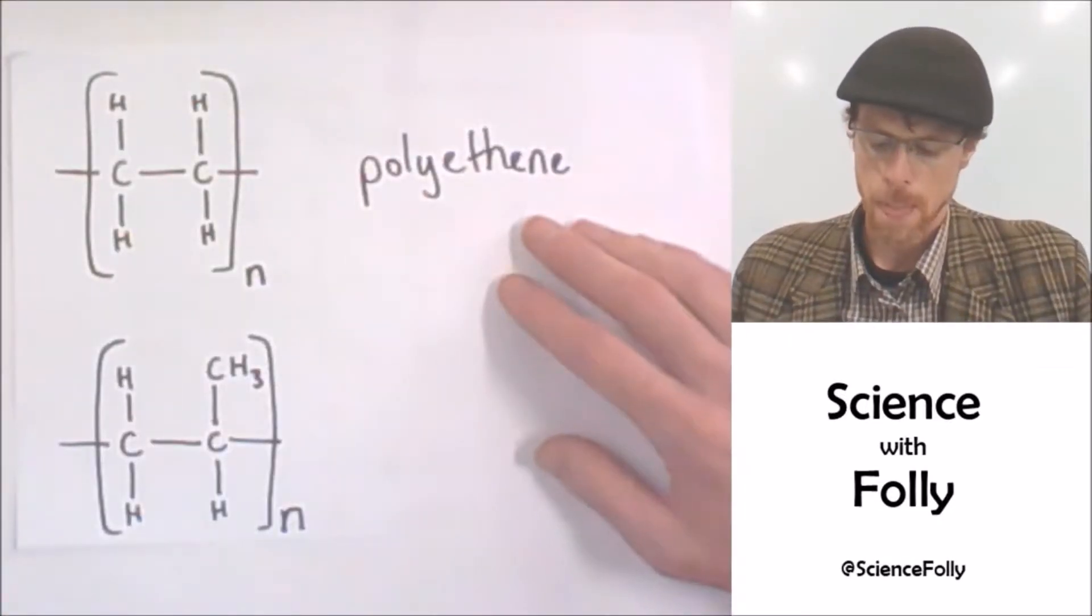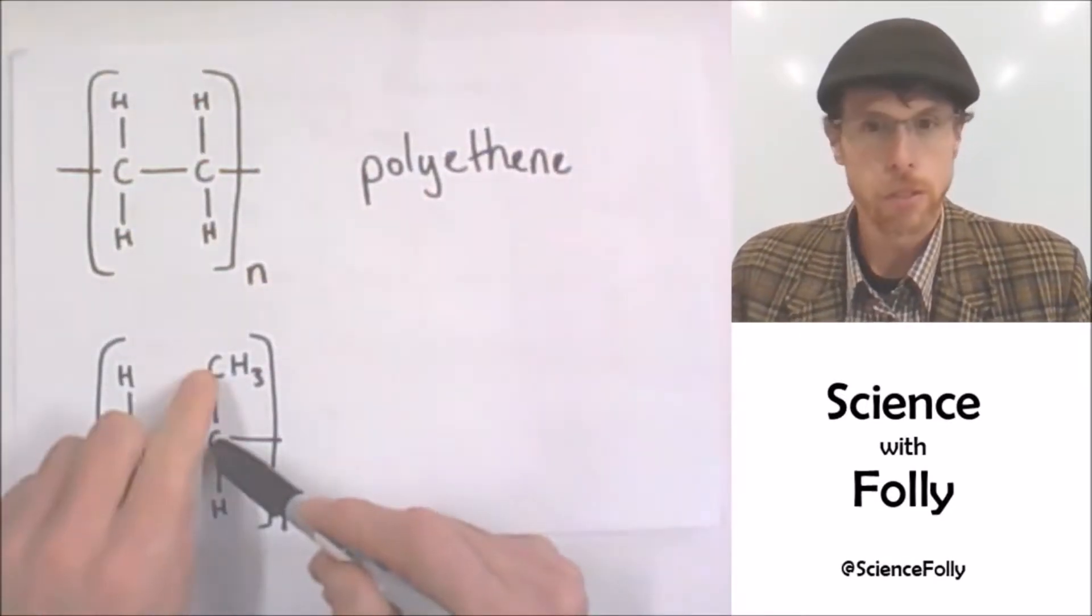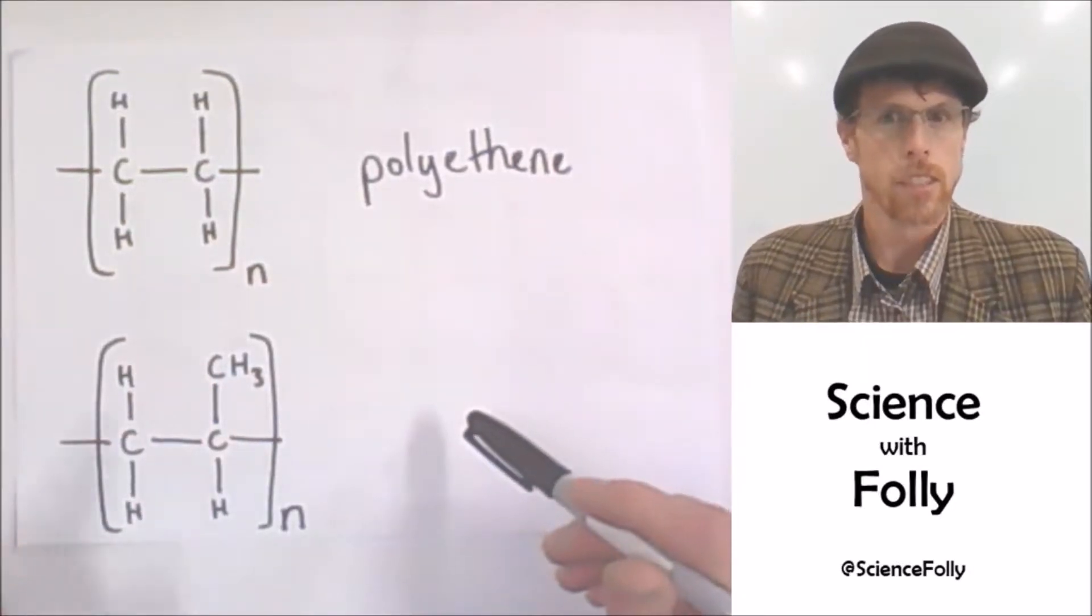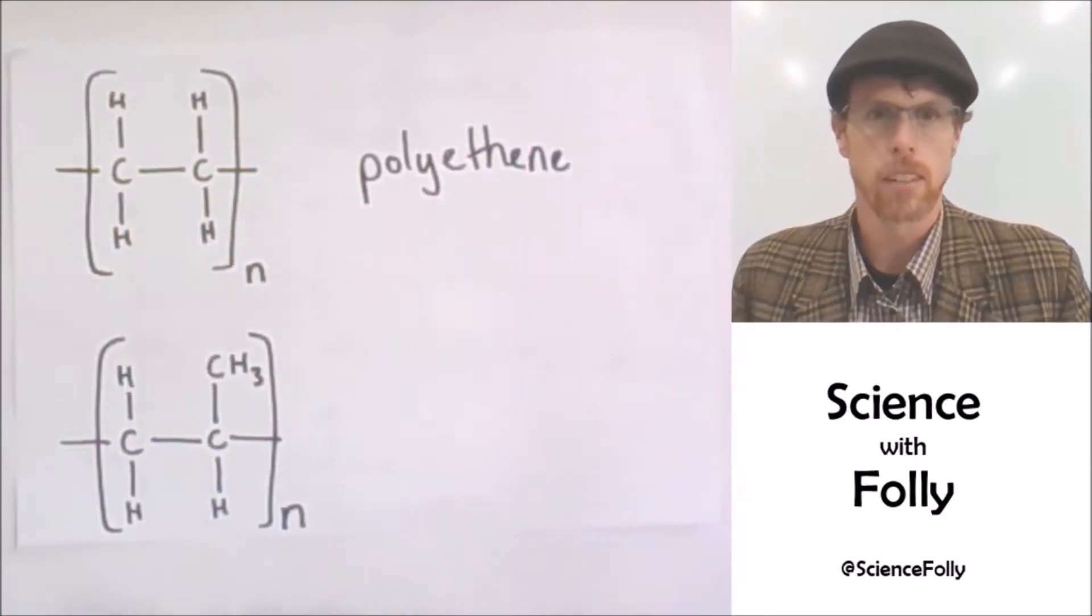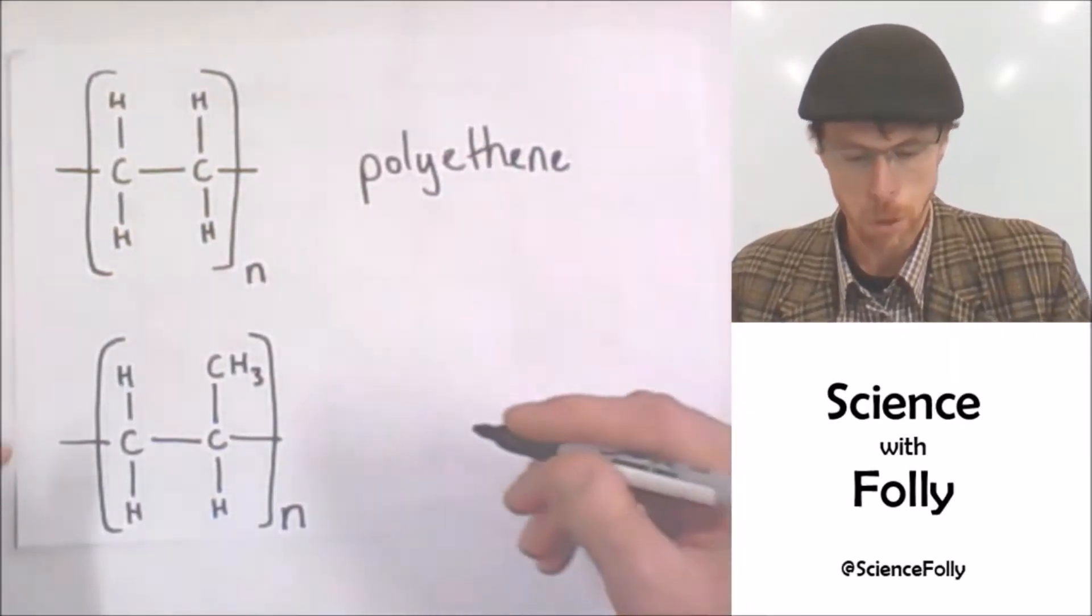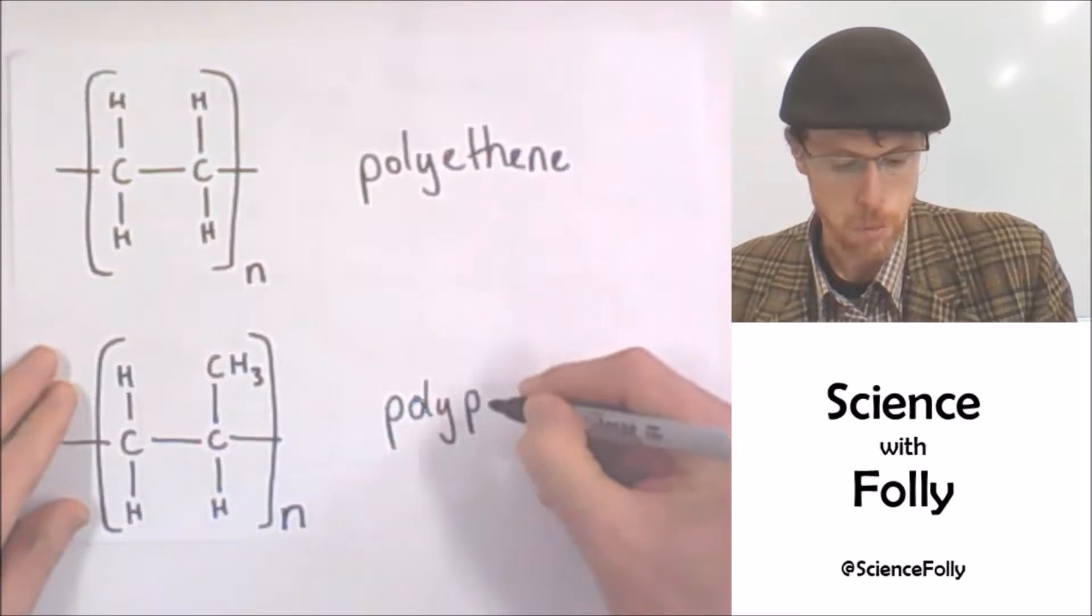So let's look at this one. We've got one, two, three carbons in this chain, so it's going to be propene being the monomer that makes this up. So lots of propenes, polypropene.